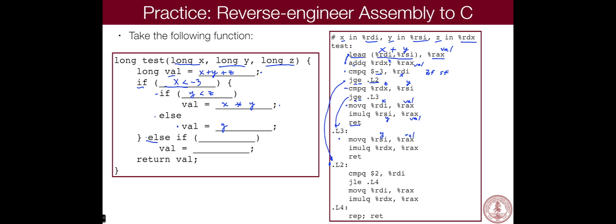And then we're multiplying it by RDX, which is Z, and putting that value back into RAX. We're multiplying RAX by D. So val times.